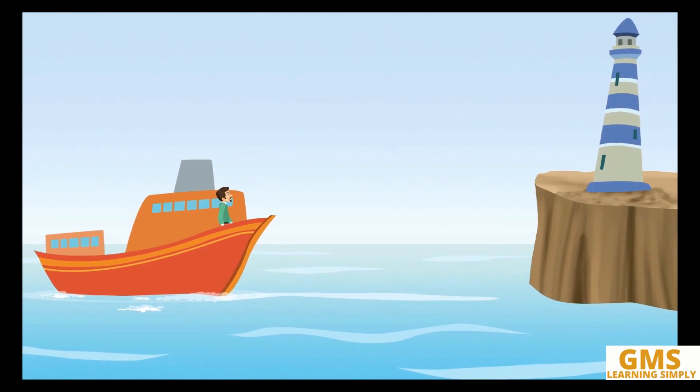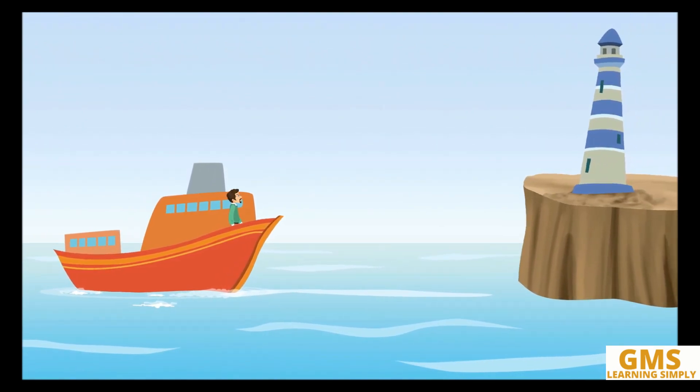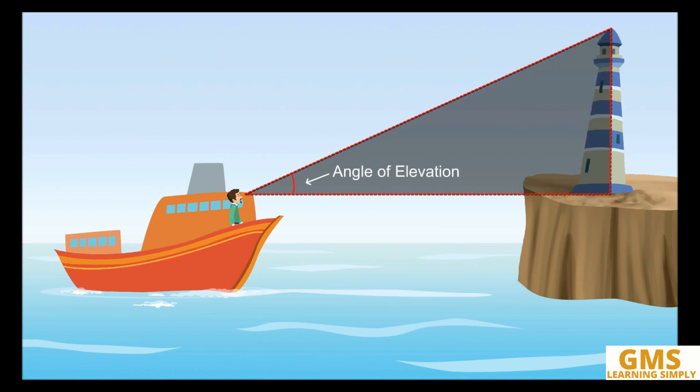A ship is sailing on the sea. A man standing on the deck of the ship sees a lighthouse at some distance. The top of the light makes an angle of elevation and the eye of the man. The line joining the top of the lighthouse and the observer's eye is called the line of sight.